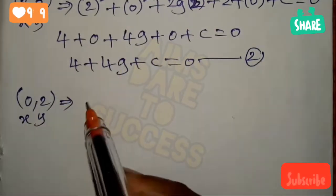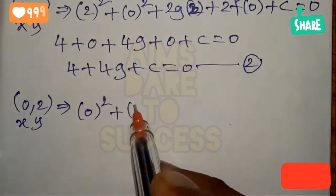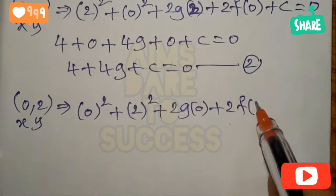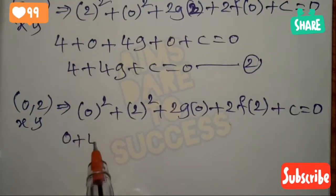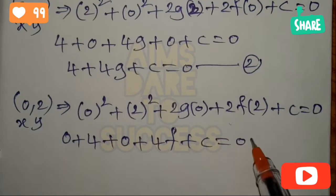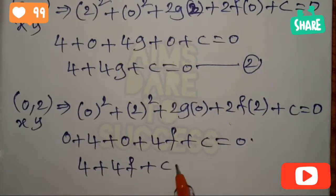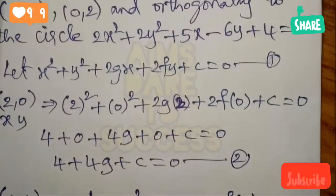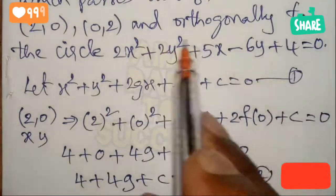Next, substitute the second point (0, 2): x² = 0² = 0, y² = 2² = 4, plus 2g into 0 = 0, plus 2f into 2 = 4f, plus c = 0. Simplifying gives 4 + 4f + c = 0, which is equation 3.